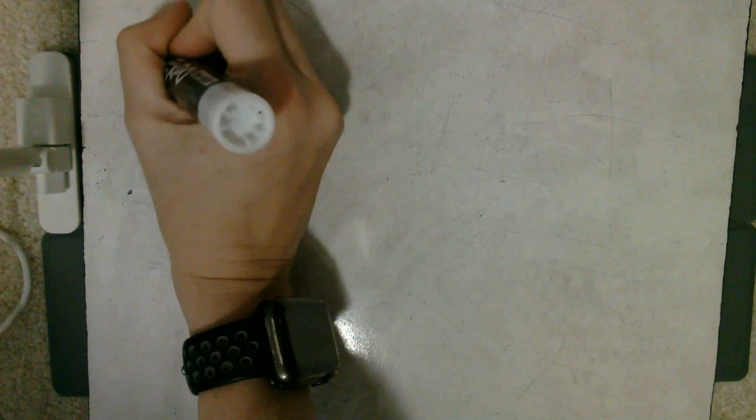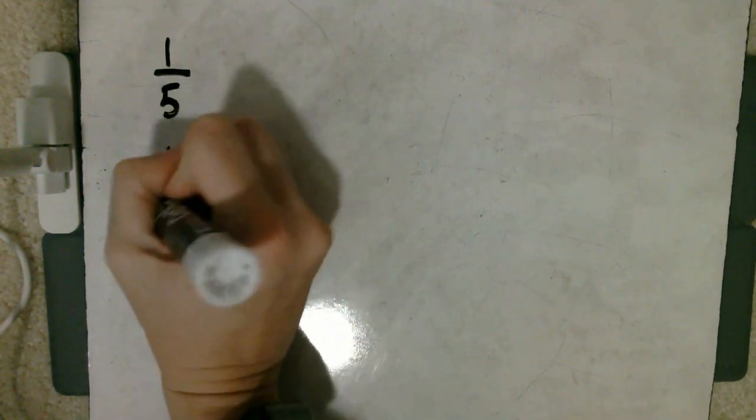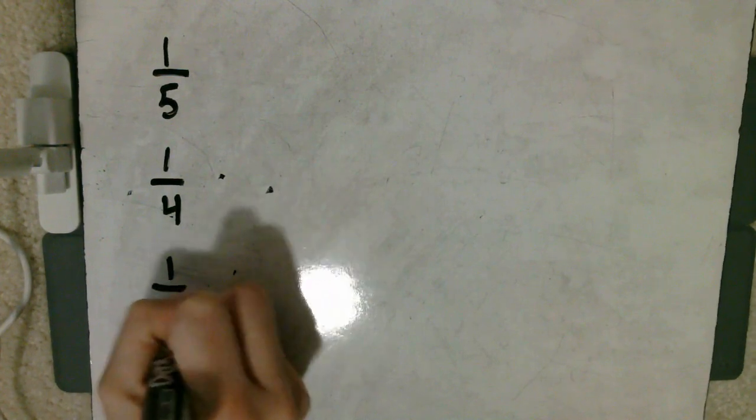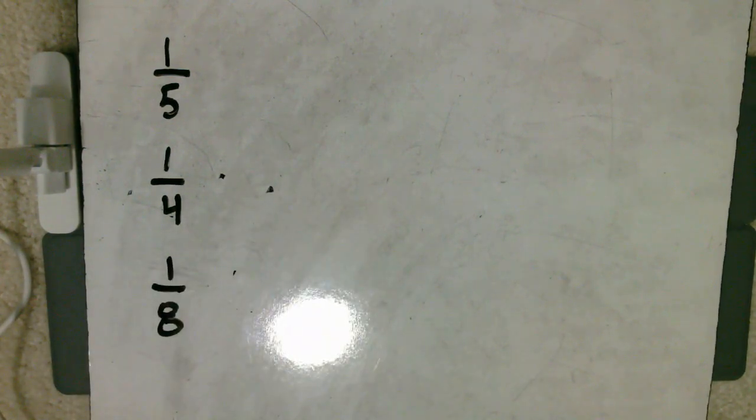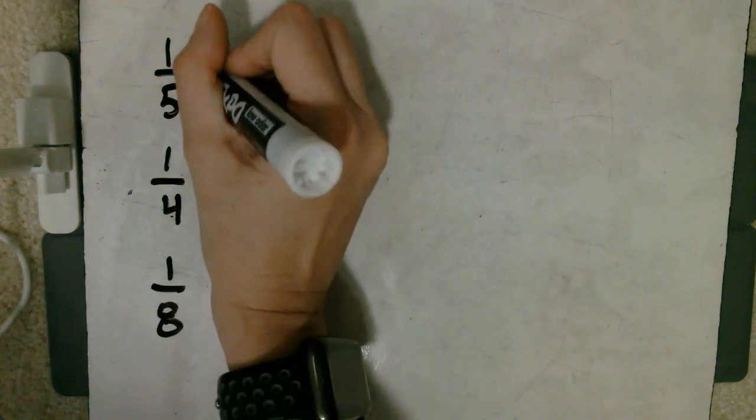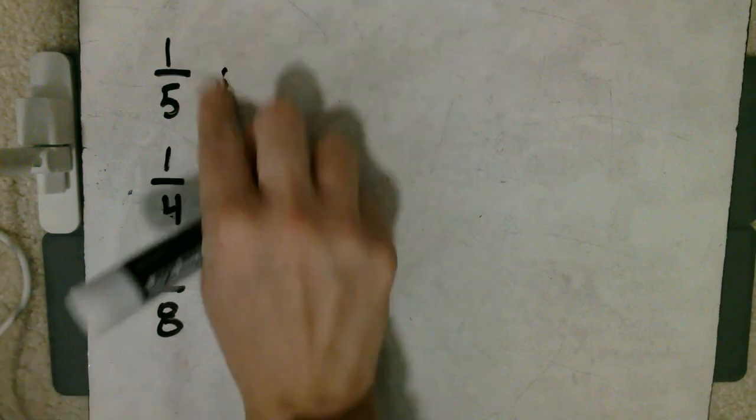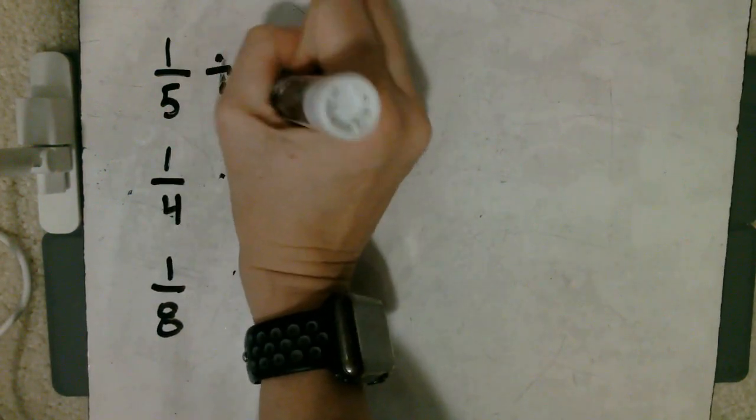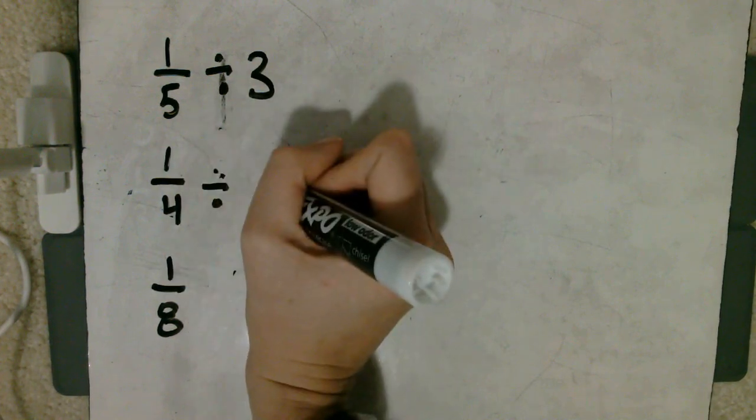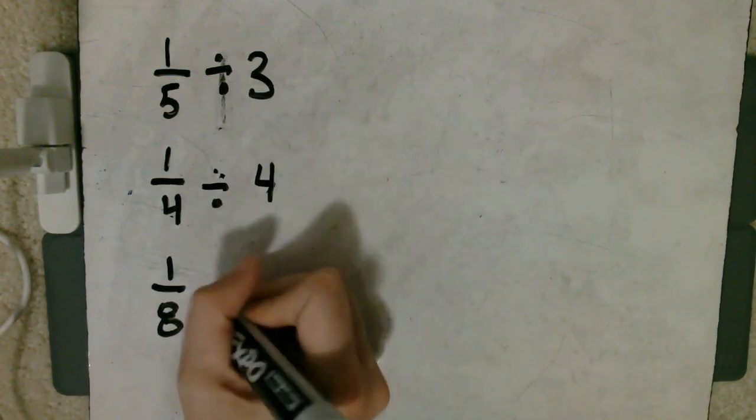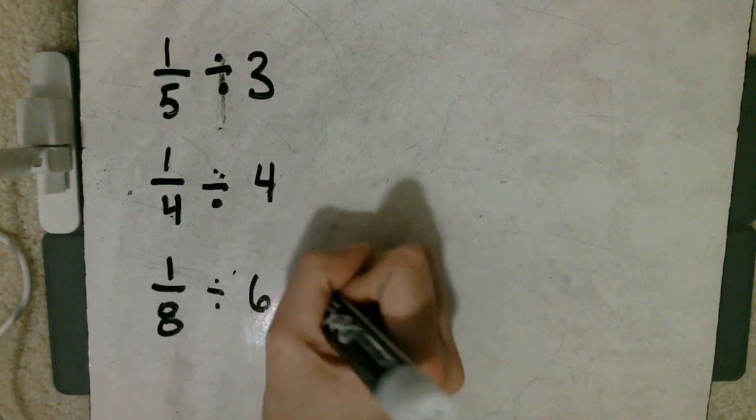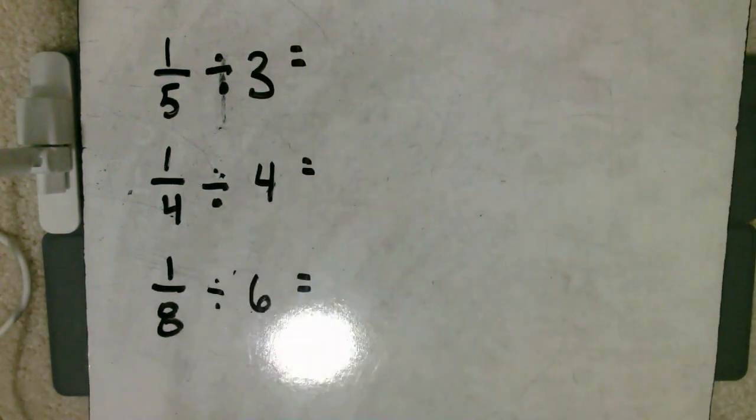Now that we've had a chance with some consistent fractions, let's try some random ones: one fifth, one fourth, and one eighth. Let's record these fractions on our boards and then divide them. Let's do one fifth divided by three, one fourth divided by four, and one eighth divided by six. Pause the video and come back when you're ready to see the answers to these three.